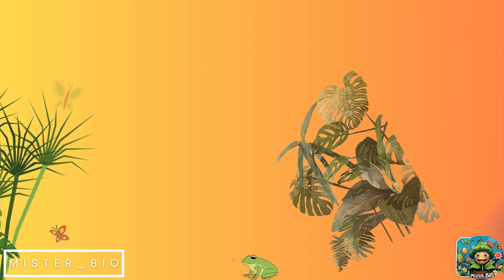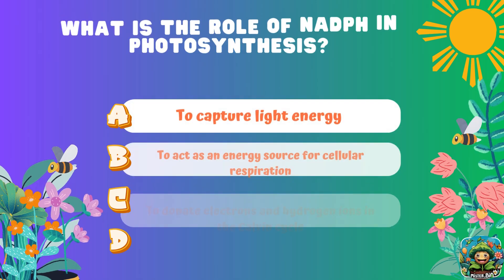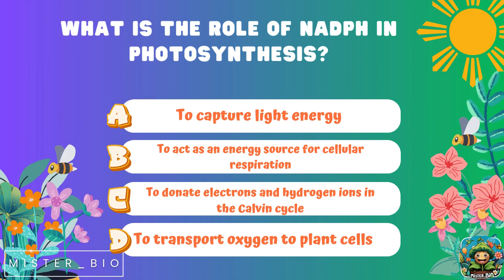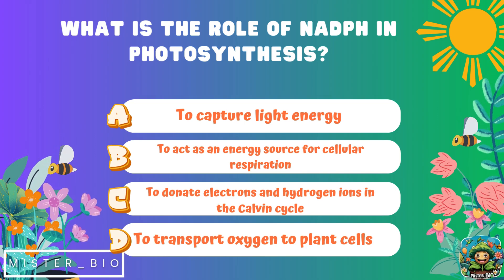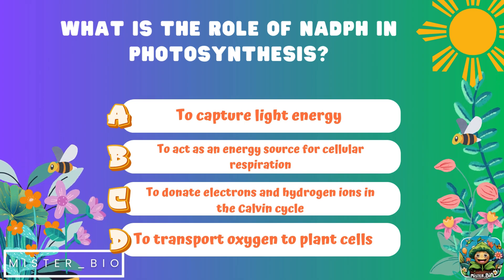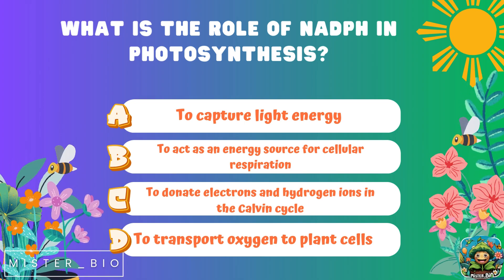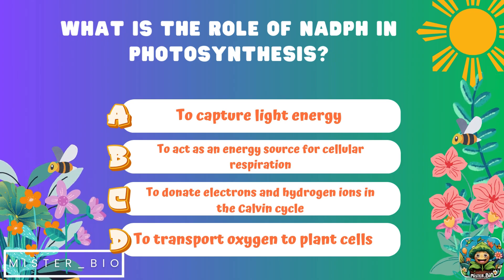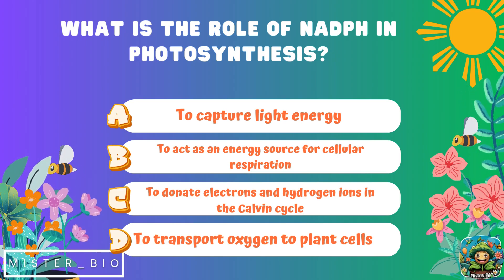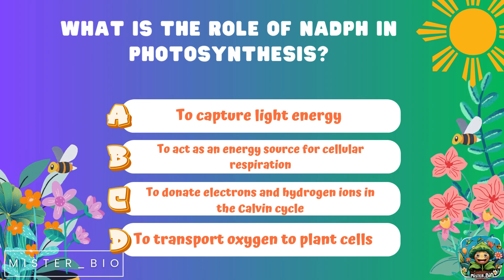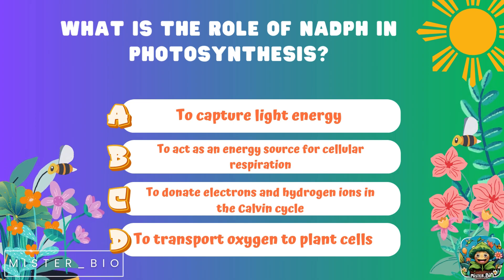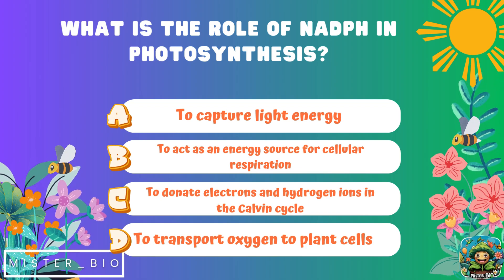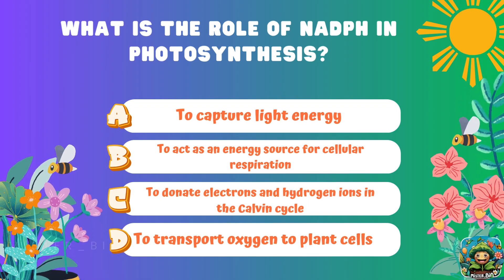What is the role of NADPH in photosynthesis? A) to capture light energy, B) to act as an energy source for cellular respiration, C) to donate electrons and hydrogen ions in the Calvin cycle, or D) to transport oxygen to plant cells.